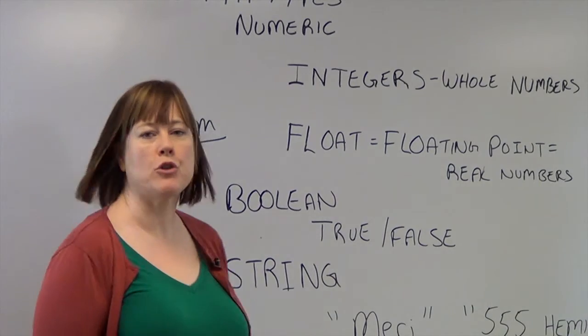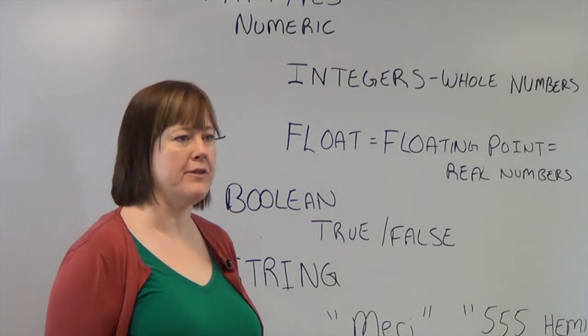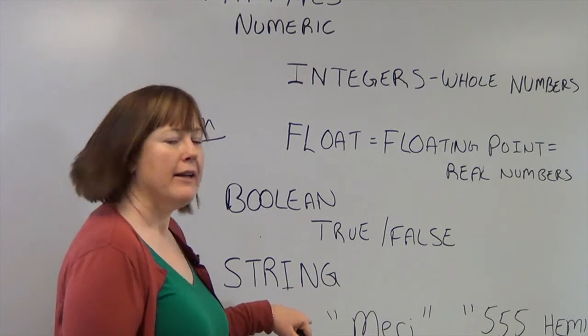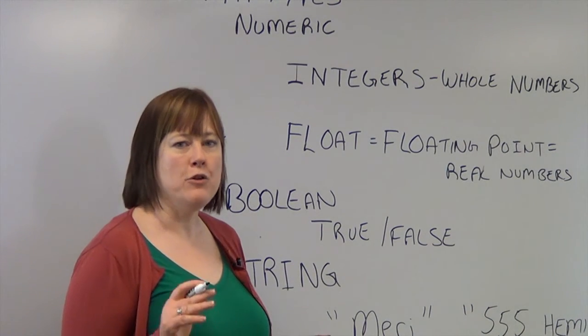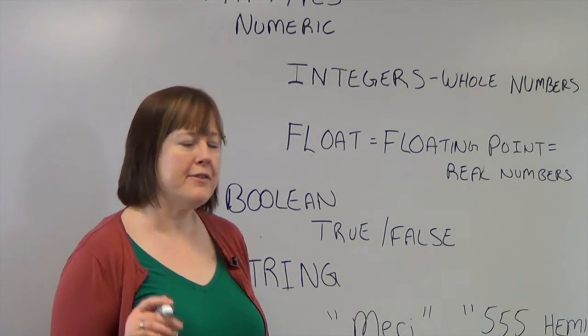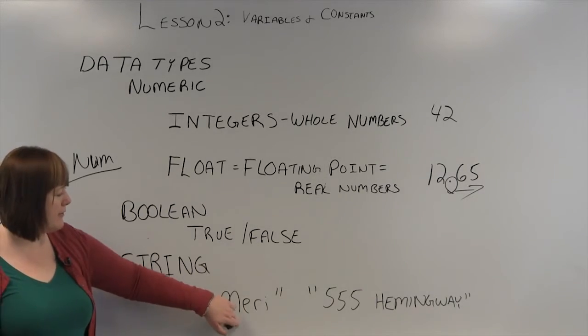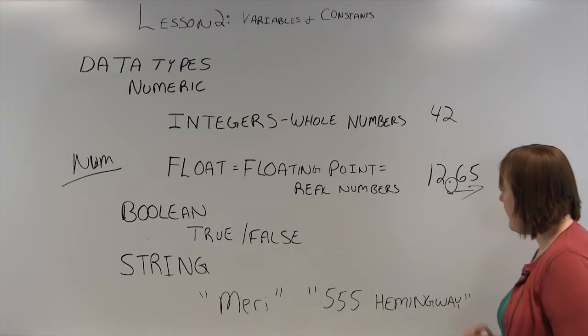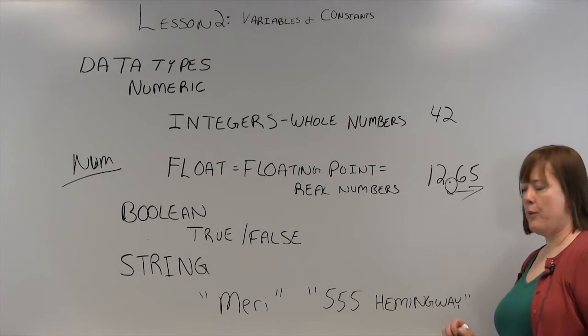Then you can also have Booleans, which are true and false values. We'll get to those in a later chapter. And you'll have a string. A string is also considered to be an alphanumeric value. Because a string will let you have letters. It will let you have numbers and spaces.